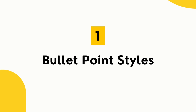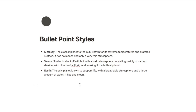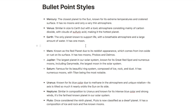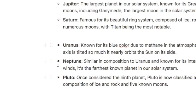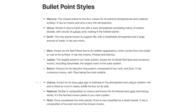Tip number one is that you can actually change the style of bullet points within Notion. You've probably seen a bullet point list with circular bullets, but you can change the styling to an empty circle or a square bullet point.